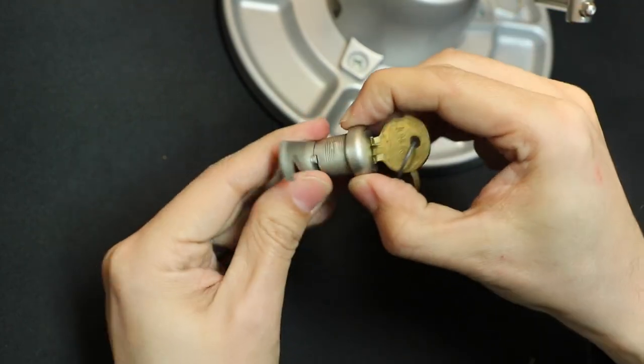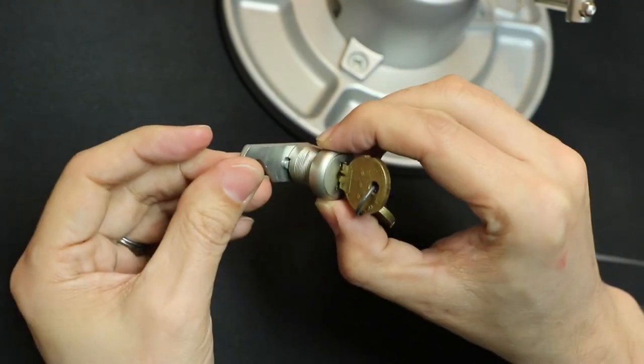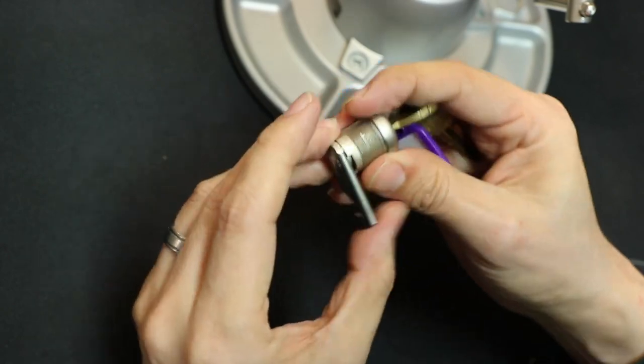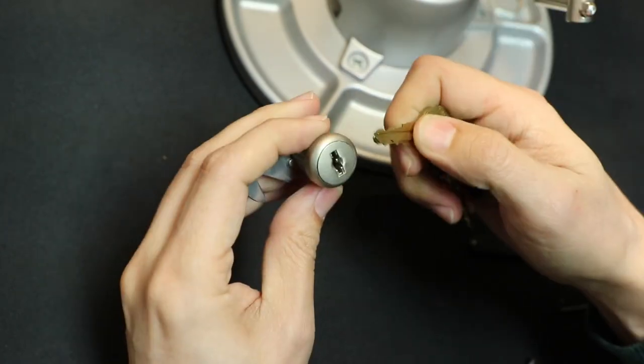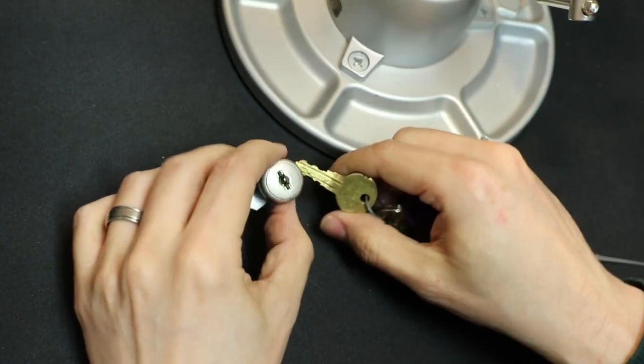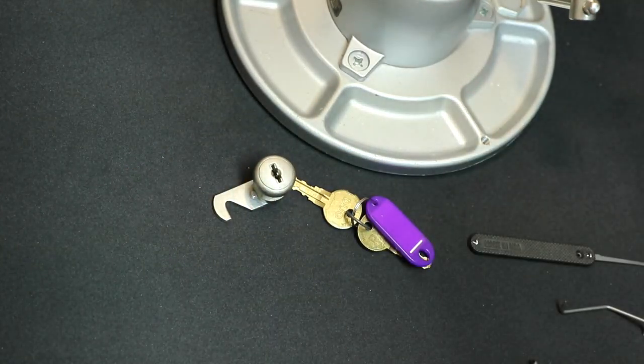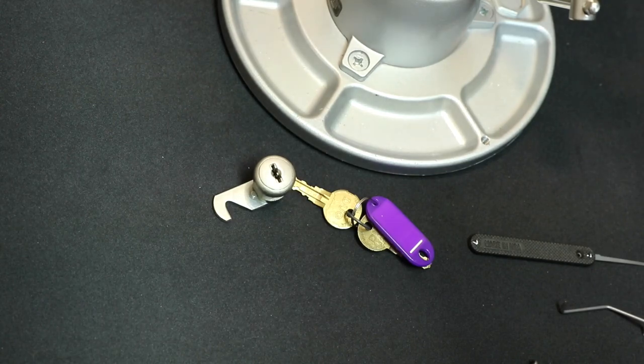So that's the 14 wafer Illinois Duo lock. Unfortunately, I can't gut it in this format. But there are other videos out there. I don't do wafer locks, so it's a little bit tricky for me, but hopefully you enjoyed that. Thanks, Illinois Duo. Bye.